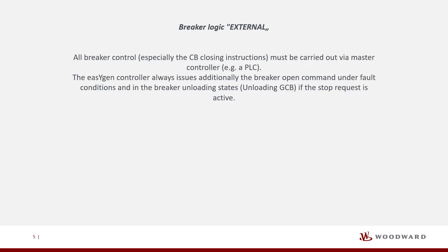Breaker logic external: all breaker control, especially the CB closing instructions, must be carried out via master controller, for example a PLC. The EasyGen controller always additionally issues the breaker open command under fault conditions and in the breaker unloading states, unloading GCB, if the stop request is active.